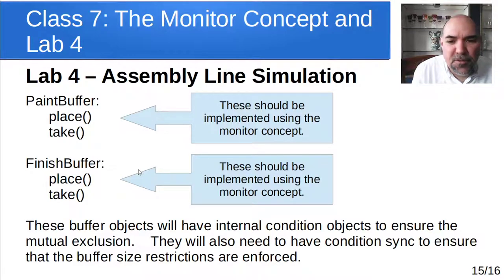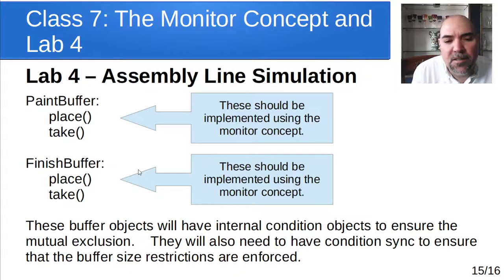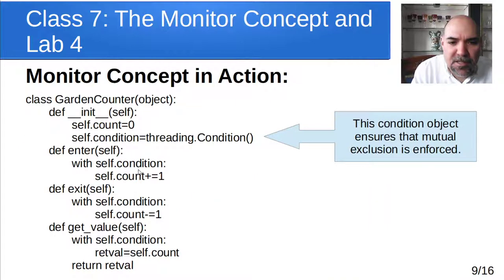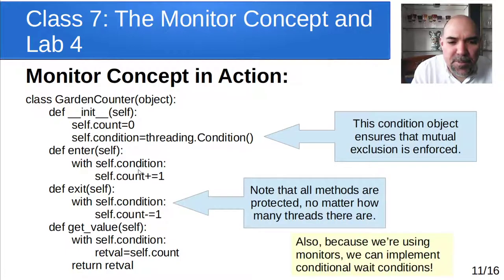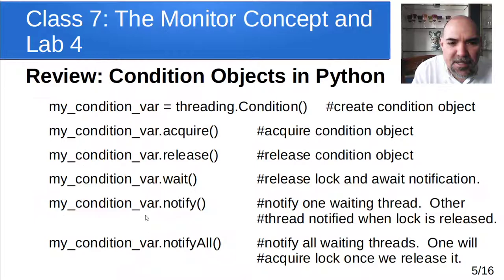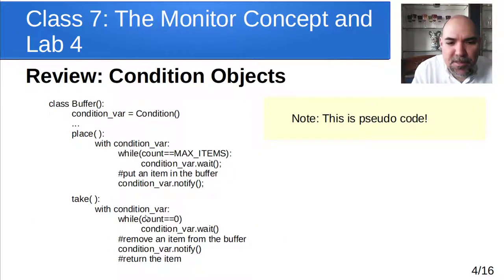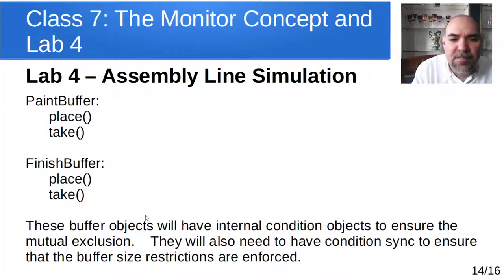Each of those should be implemented using that monitor concept we talked about earlier. Go back and look at that slide if you need to. Your class is going to look a lot like this kind of pseudocode here — you're going to have conditional waits like we did back in the previous example — but you're going to have to have a max size. This is pseudocode, so you're going to have to convert it.